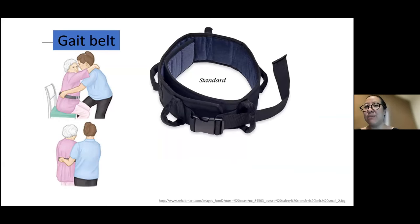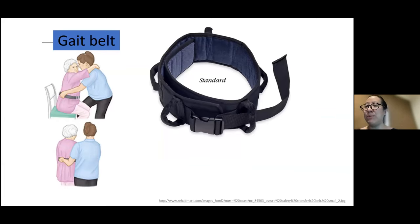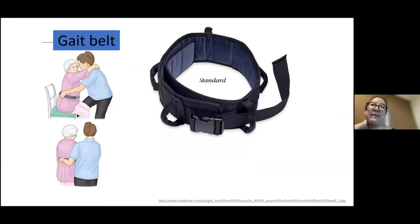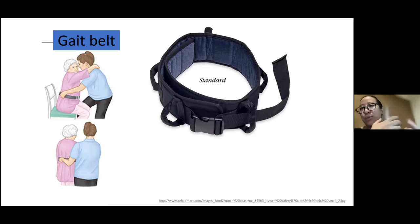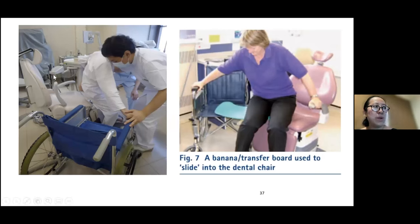If the patient can still bear some weight on their feet, a gait belt works well — any kind of belt or a large piece of cloth wrapped around the waist. A key tip: do not let the patient put their hands on your neck, as the weight can hurt your cervical spine. Use the shoulder or scapula instead. With the four- or five-hinge chair, patients can often transfer themselves even with hemiparesis.